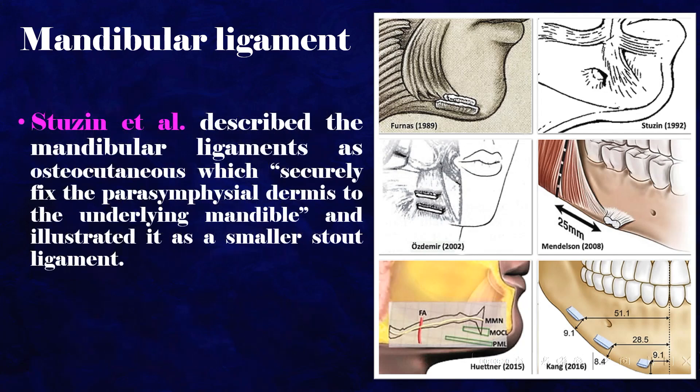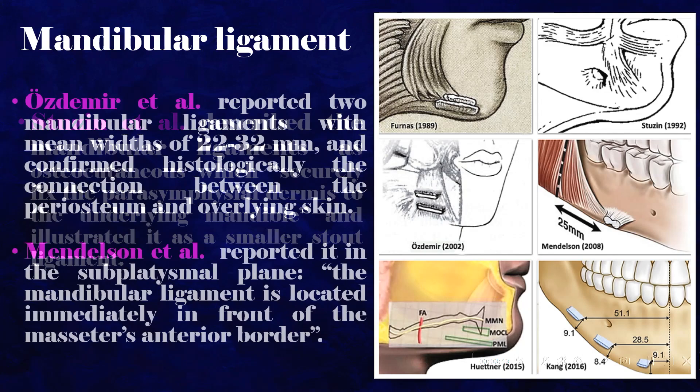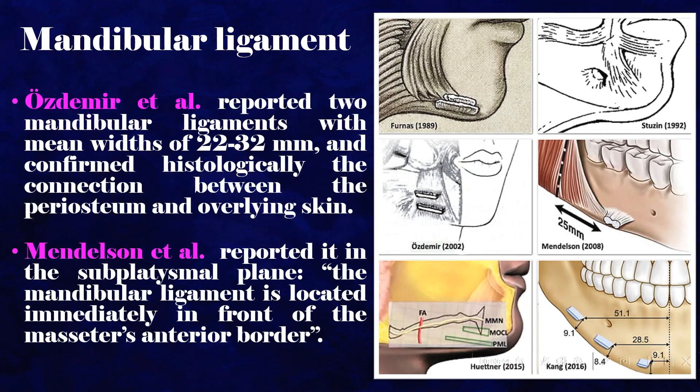Stuzan et al. described the mandibular ligaments as osteocutaneous, which securely fix the parasymphyseal dermis to the underlying mandible, and illustrated it as a smaller stout ligament. Oshdamir et al. reported two mandibular ligaments with mean widths of 22 to 32 mm and confirmed histologically the connection between the periosteum and overlying skin.